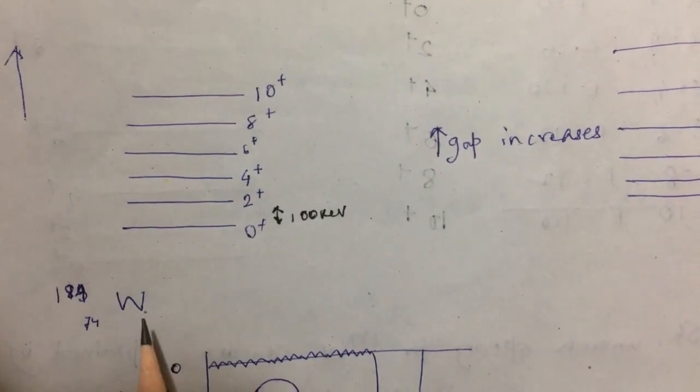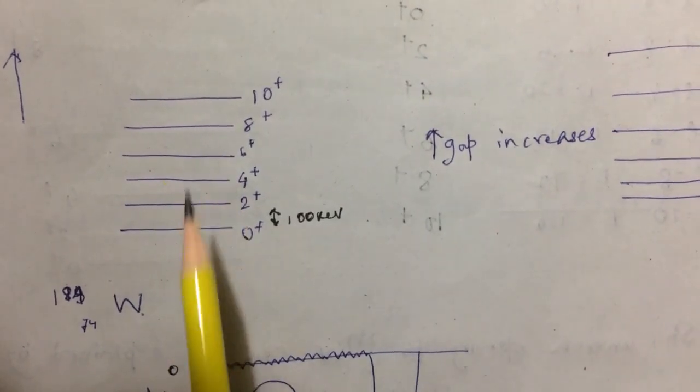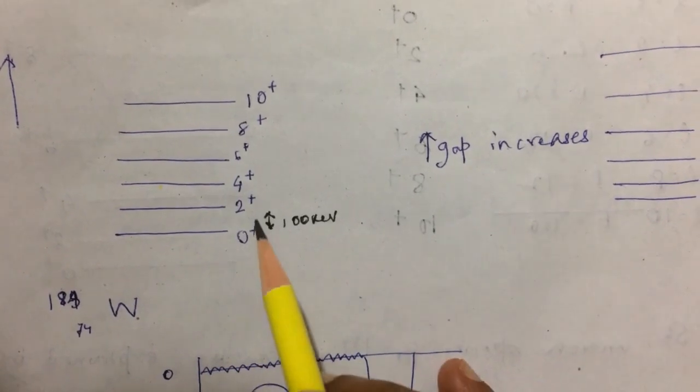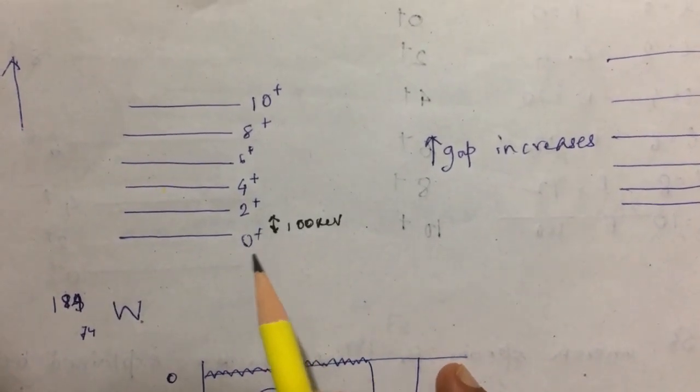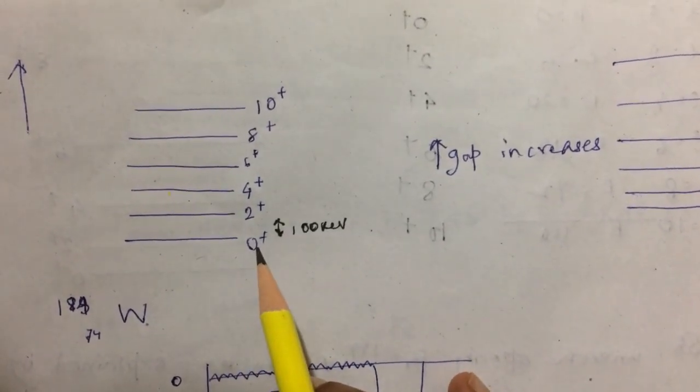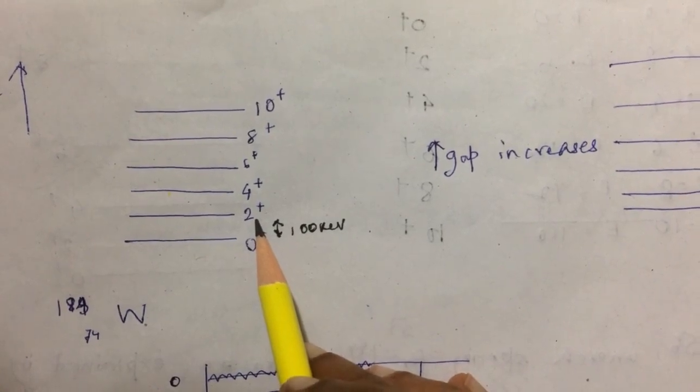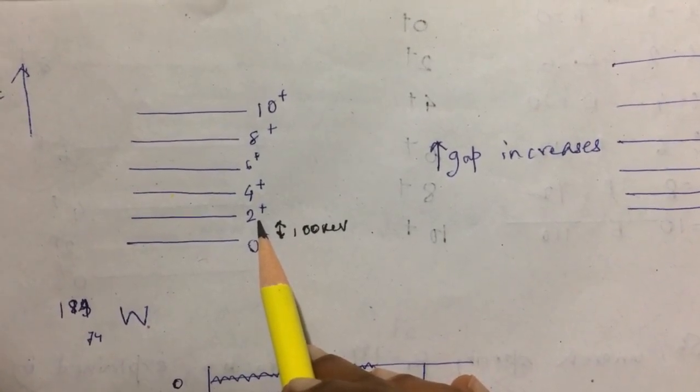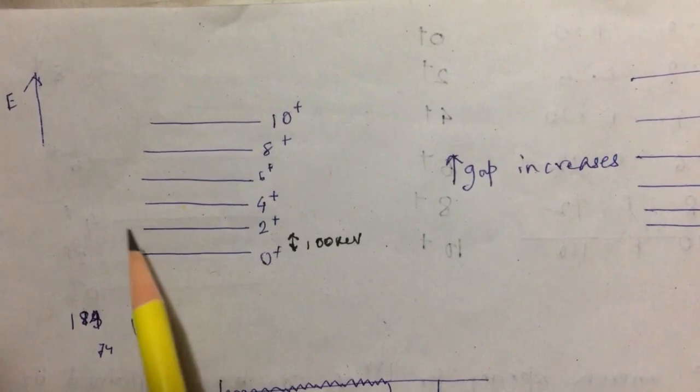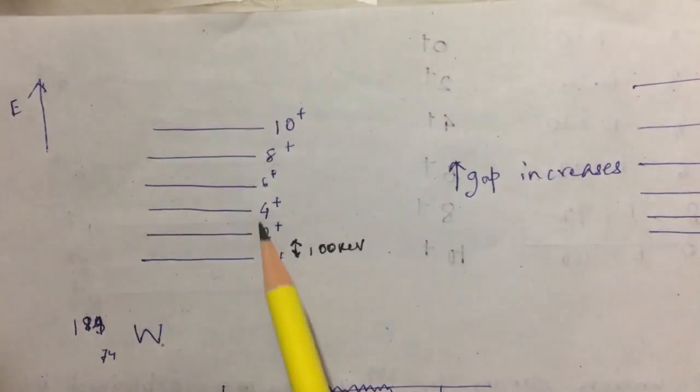Now let's have a look at the tungsten energy states. These energy states show that the ground state is 0+, and the first excited state is 2+, which is quite evident for an even-even nucleus. Energy goes up here.